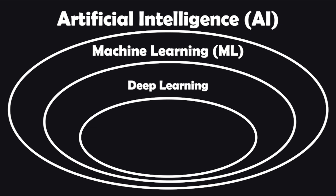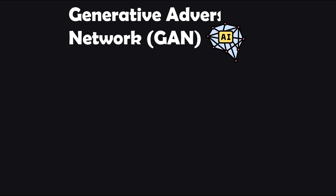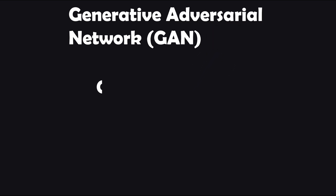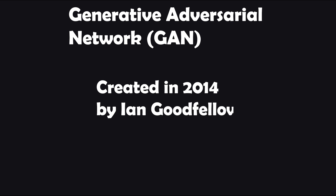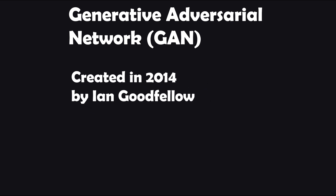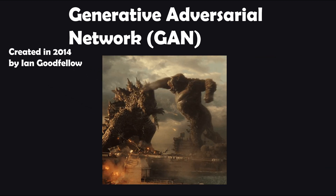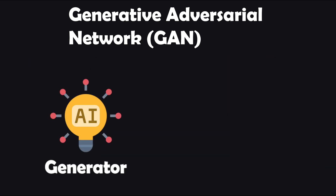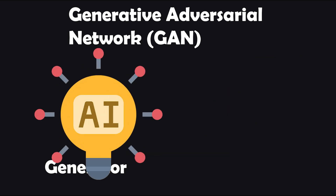Deepfakes leverage a branch of artificial intelligence called deep learning. Specifically, a type of neural network known as a generative adversarial network, also known as a GAN. A GAN, which was created in 2014 by computer scientist Ian Goodfellow, consists of two competing neural networks: a generator and a discriminator.